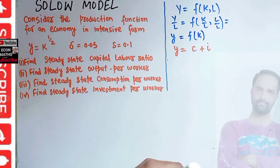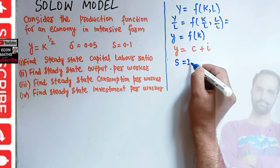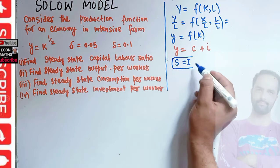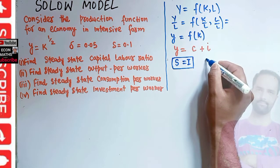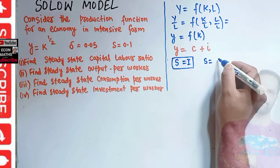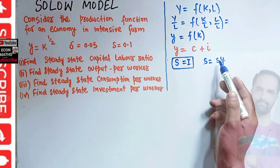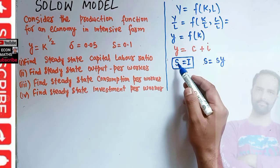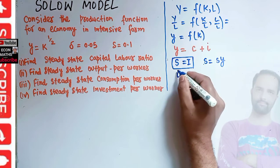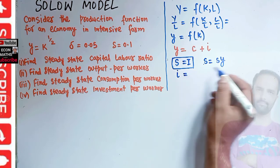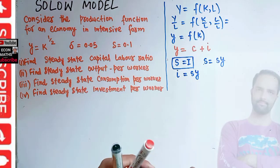We also assume that savings is equal to investment in the Solow model. We assume people save a fraction of their income: S is equal to small s times y, where small s is the national savings rate. Since S equals I, our investment per worker — small i — will be equal to savings rate s times output per worker y.